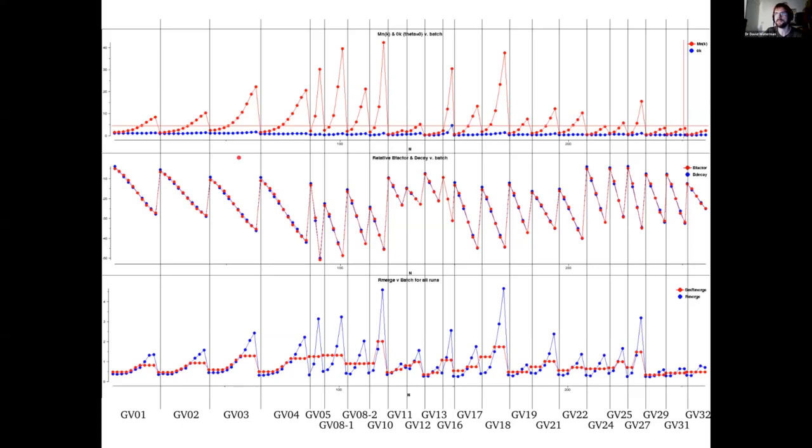So the main work in processing this data set was the job of determining the right radiation damage cutoffs and excluding particular data sets and that's a familiar task for anyone who has combined many small wedge x-ray diffraction data sets too. So there's nothing really specific to electron diffraction about that.